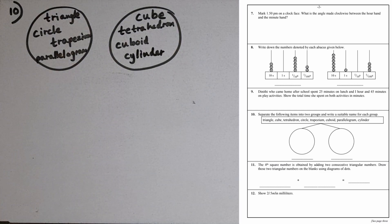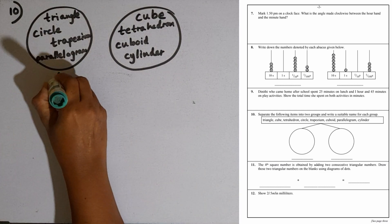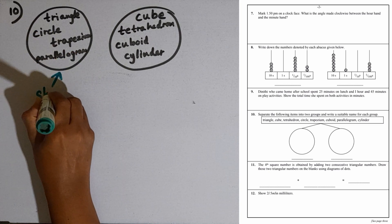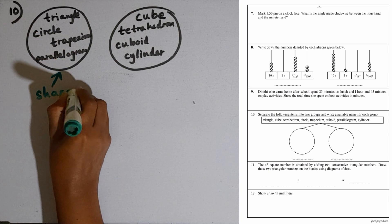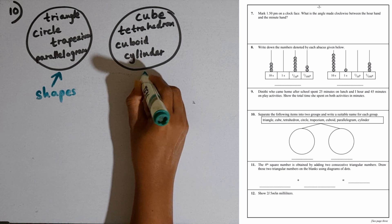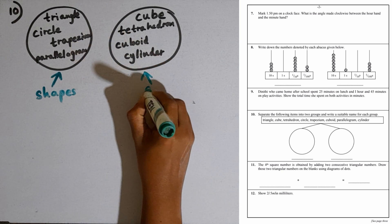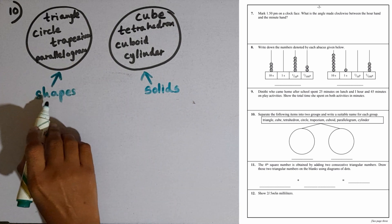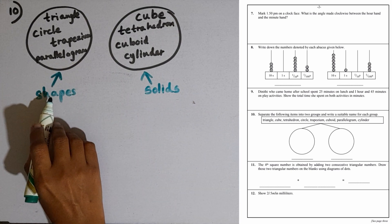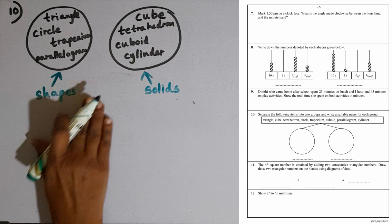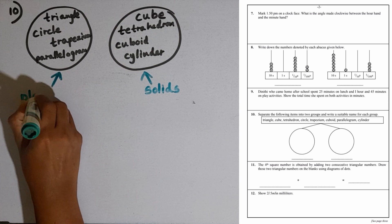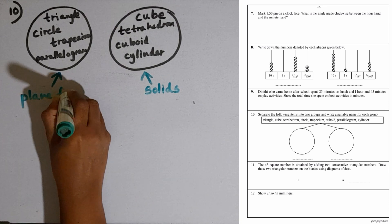What are the special names we can give for these two groups? These are shapes, these are solids. Or plane figures. The special name can be given as plane figures and solids.